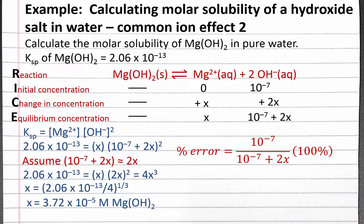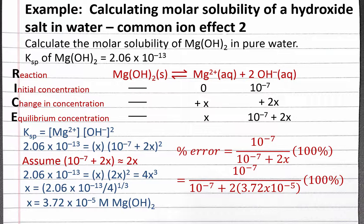This goes in the numerator. The original expression is 10 to the negative 7 plus 2x, so this goes in the denominator. If we substitute in the value of x that we calculated based on our assumption and complete the calculation, we get 0.134% error.